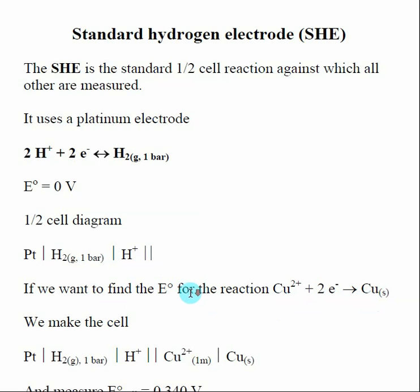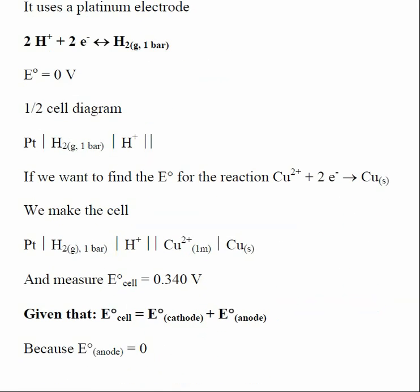We take the standard hydrogen electrode and set it up as one cell, and then the other cell we make with this copper solution in contact with our cathode, in this case copper solid. We take a voltmeter and measure the flow of electrons. When we set it up and apply a voltmeter, we get a measurement of 0.340 volts.